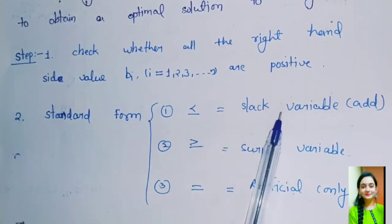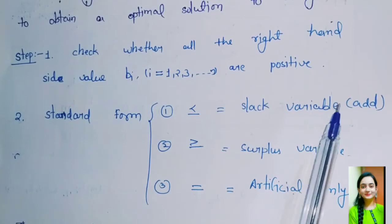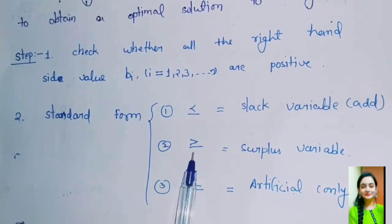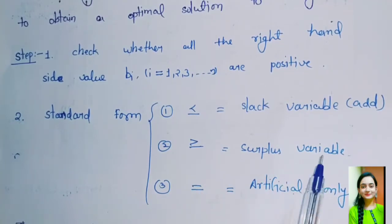If we have less than or equal to type constraint, then we add slack variable on left-hand side of the constraint. If we have greater than or equal to type constraint, then we subtract surplus variable on left-hand side. And lastly, if we have equal to type constraint, then we only add artificial variable.